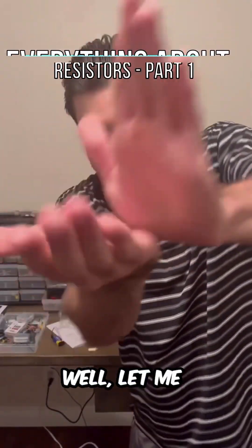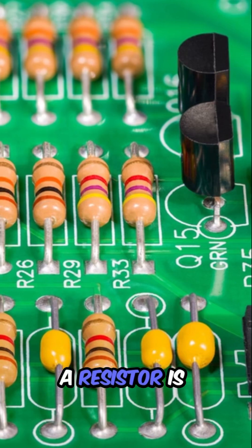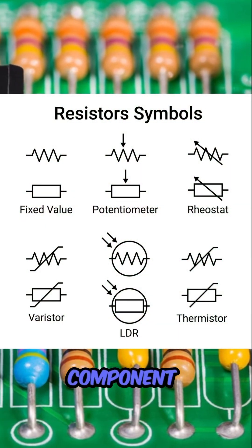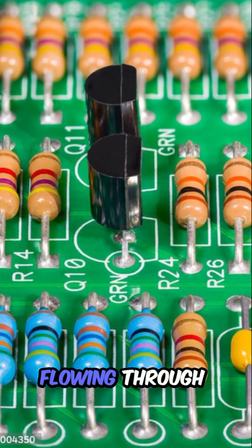What in the world's a resistor? Well, let me tell you. A resistor is a passive two-terminal electrical component that limits or resists the flow of electrical current.